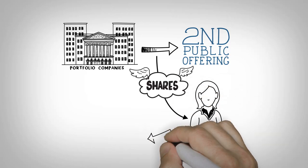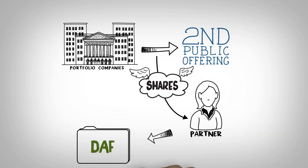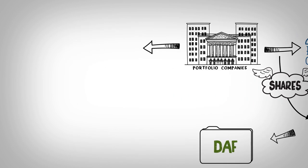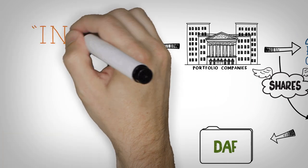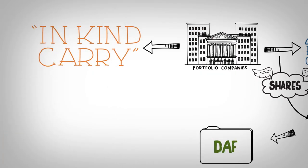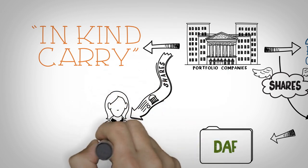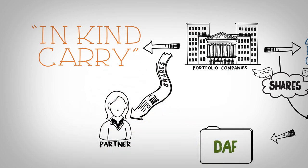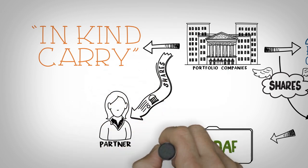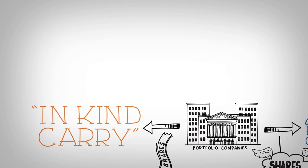Those shares can then be used as a charitable contribution to a DAF. In some other structures, the governing documents allow for an in-kind carry distribution of portfolio company stock to the partners, and those shares can then be used as a charitable contribution to a DAF.